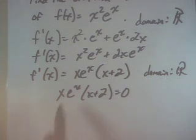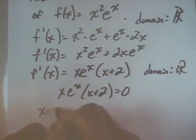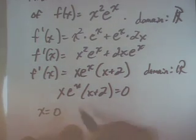Whenever you have a number times a number times a number equals zero, you know that one of those numbers is zero. Could it be x? Yes, x could be zero. Could it be e^x?